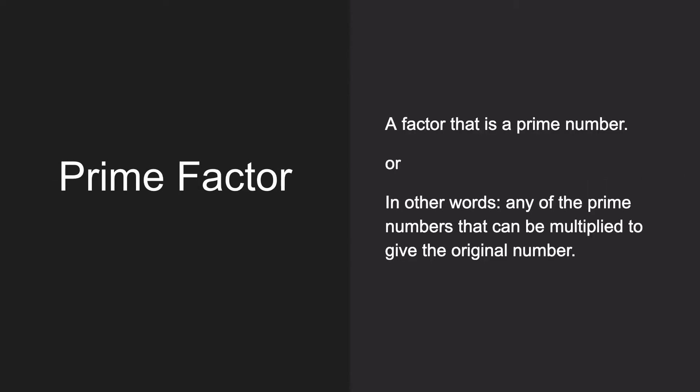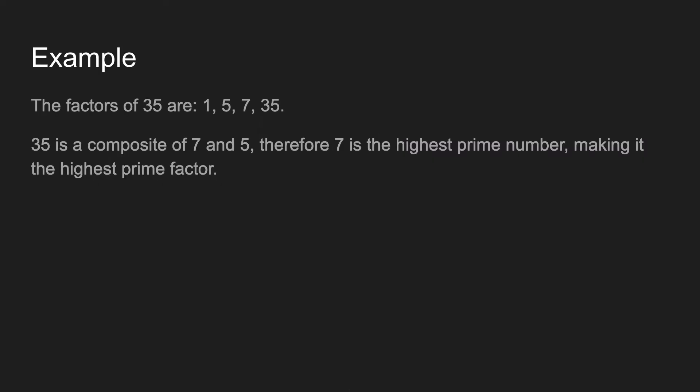A prime factor is a factor that is a prime number, or in other words any of the prime numbers that can be multiplied to give the original number. Here's an example: the factors of 35 are 1, 5, 7, and 35. Since 35 is a composite of 7 and 5, 7 is the highest prime number, making it the highest prime factor.